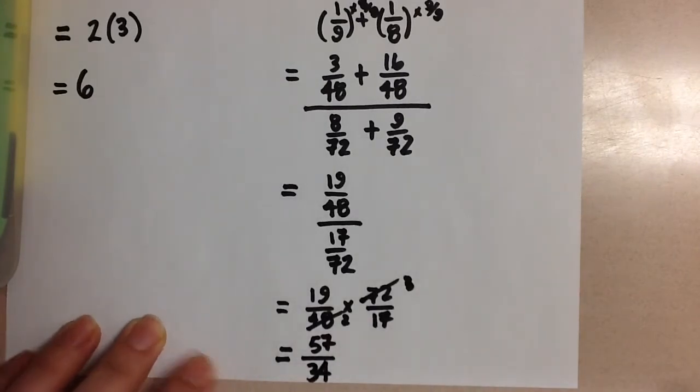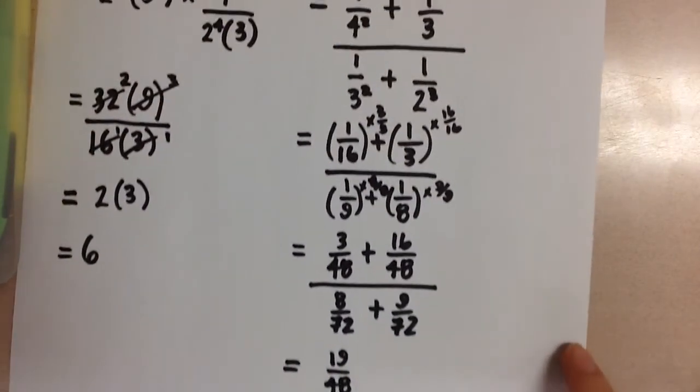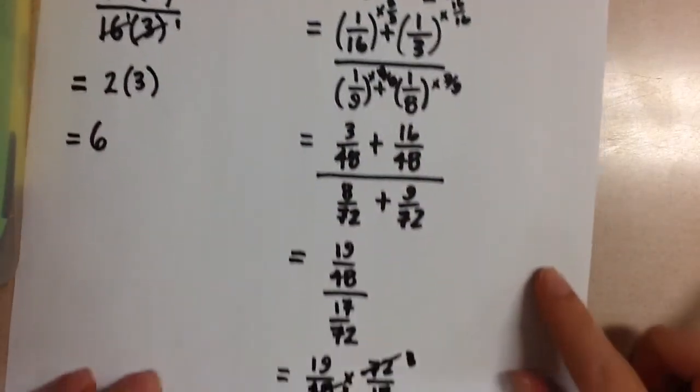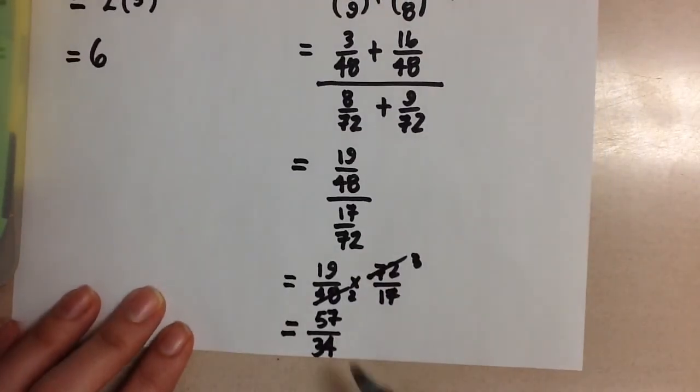So the final reduced answer for this expression that we had is 57 over 34.